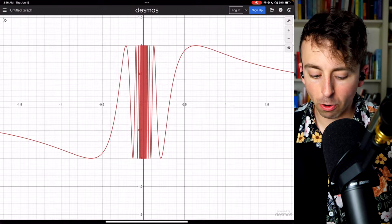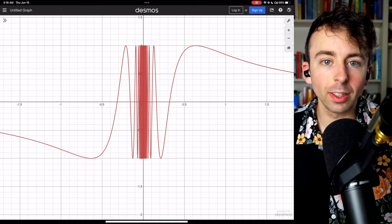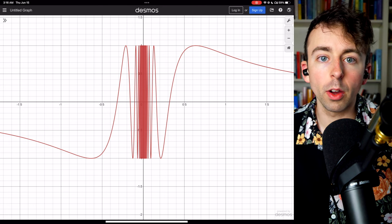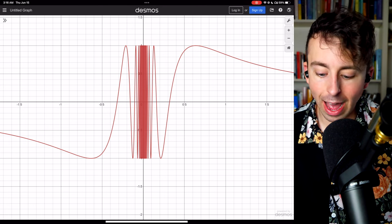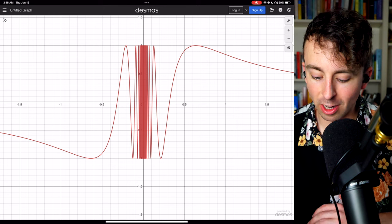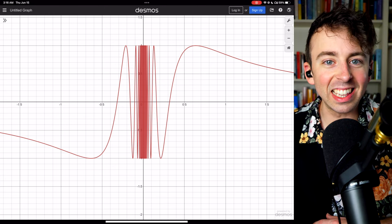But let's also consult a graph. This is what the function looks like. This is sine of 1 over x. We're thinking about what happens as x approaches 0. You can clearly see that around the origin,